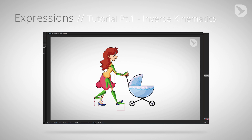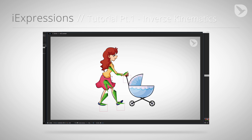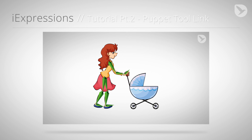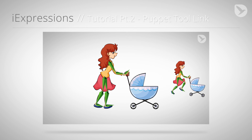In the first part we create a skeleton with the inverse kinematics functions of eye expressions. In the second part we link the character to her skeleton using the puppet tools. You also learn how to avoid bad results as shown on the right.